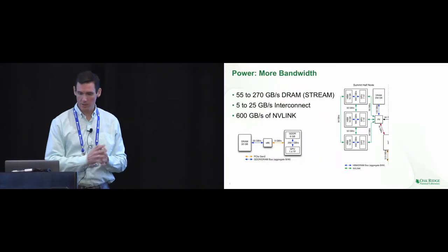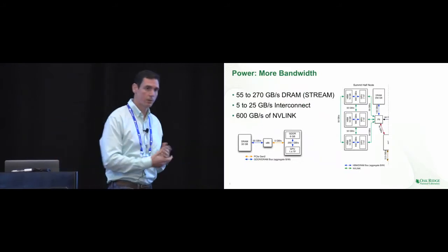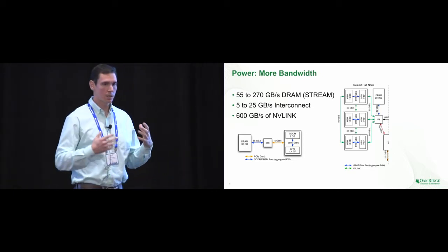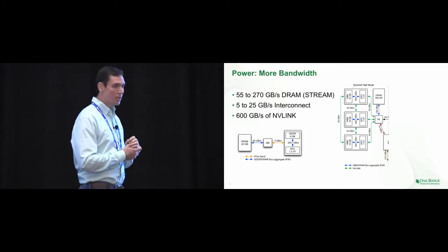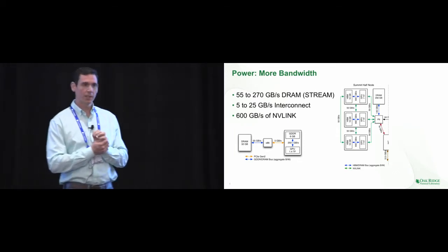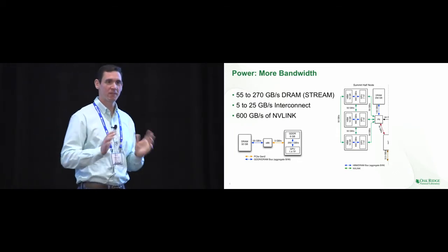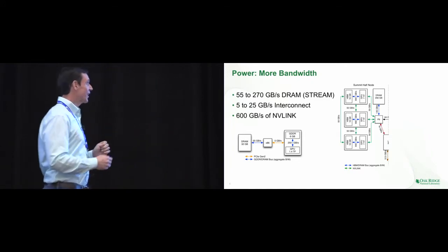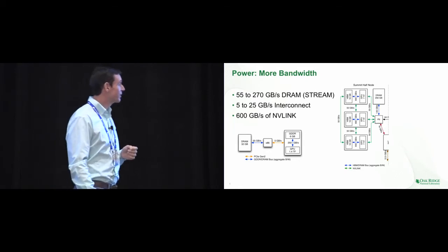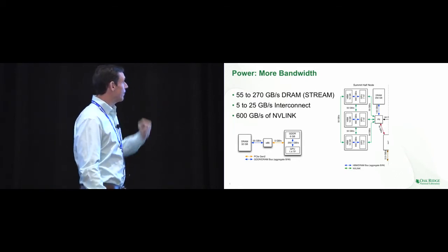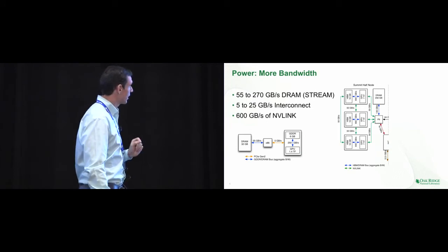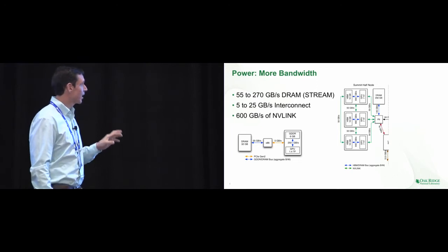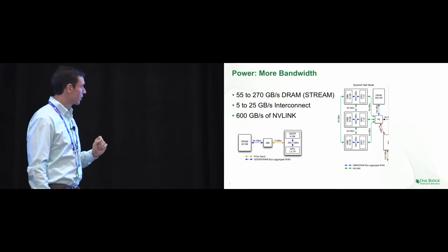What does the Power architecture provide that we couldn't have gotten from competing architectures today? The IBM architecture provides more bandwidth. We're moving from 55 to 270 gigabytes per second of DRAM performance — that's stream performance — from 5 to 25 gigabytes per second of interconnect performance, and an aggregate 600 gigabytes per second of NVLink 2 performance.